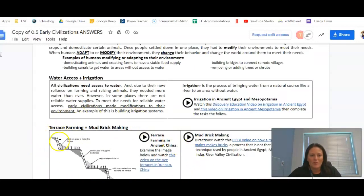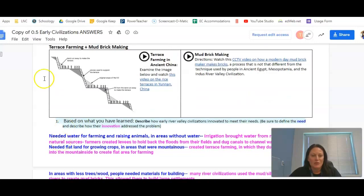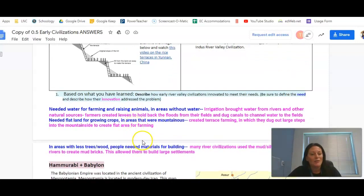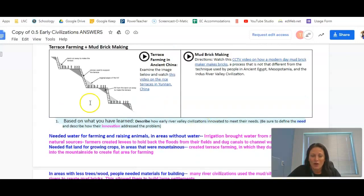The next video was on terrace farming. You can see here this is the side of a mountain and you cannot grow things on the side of a mountain because it is too steep and erosion will just take your plants away. So how did they solve that problem? They created terrace farming in which they dug out large steps into the mountainside to create flat areas for farming. You can see that here - here's the original slope and they made these areas flat and kind of dug into the mountainside so they're able to plant on each of those levels.